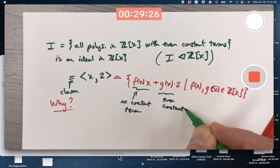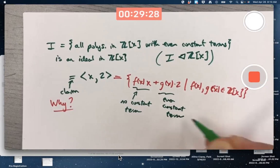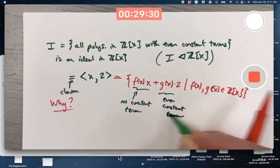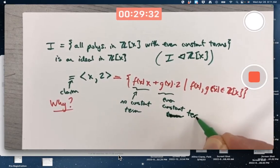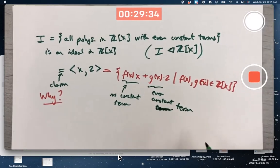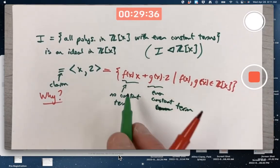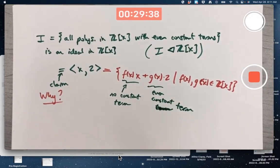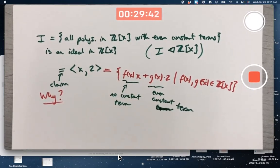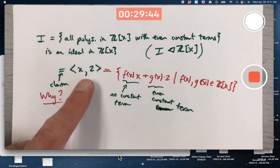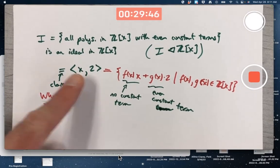And take an arbitrary polynomial times 2—that'll have an even constant term. So certainly every polynomial of this form has an even constant term. Therefore, this is a subset of that.